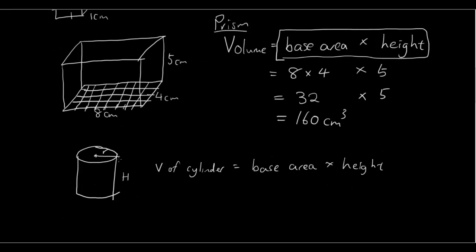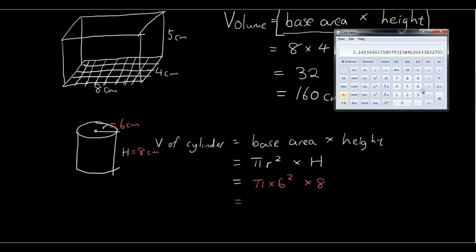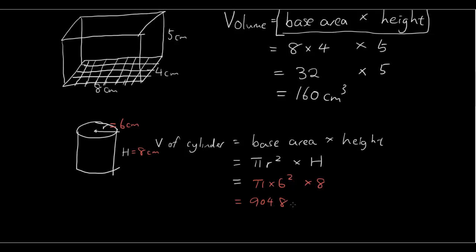Here is another example of a prism, which is the cylinder. Both of its bases are circles. So the volume of a cylinder is still base area times height. Since the base area is a circle, we have pi r squared times the height. If the radius is 6cm and the height is 8cm, then the volume is pi times 6 squared times 8, which gives 904.8cm cubed.